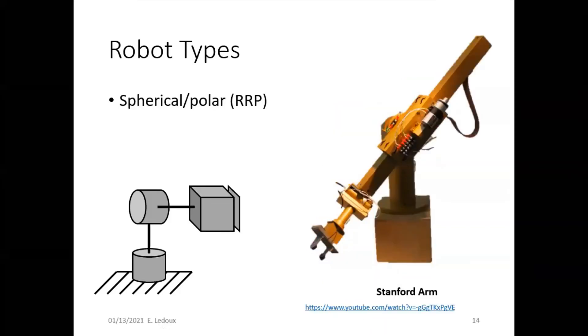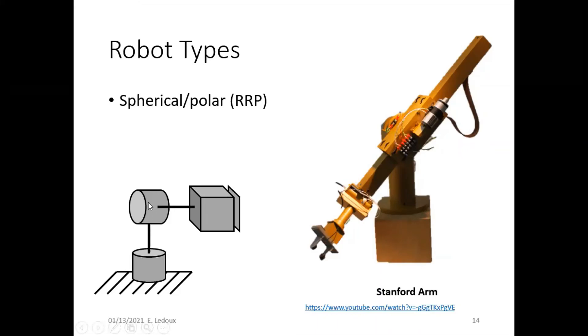Then for a spherical or polar robot, this can act in cylindrical or spherical coordinates. So two revolute joints and one prismatic joint. You can click the link to see a video of this one working.